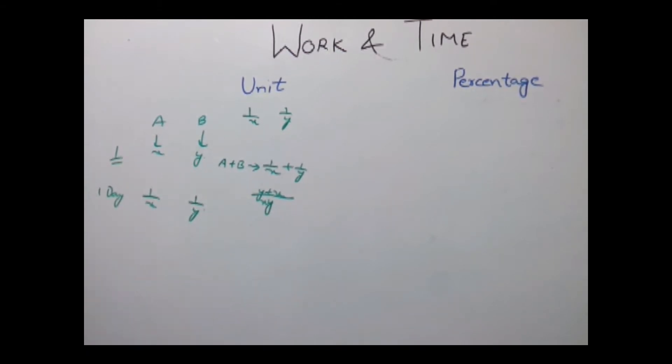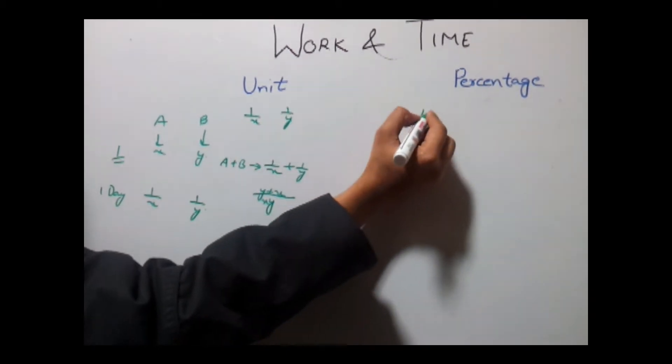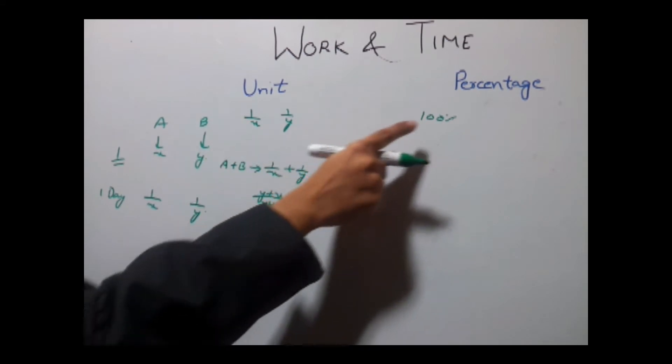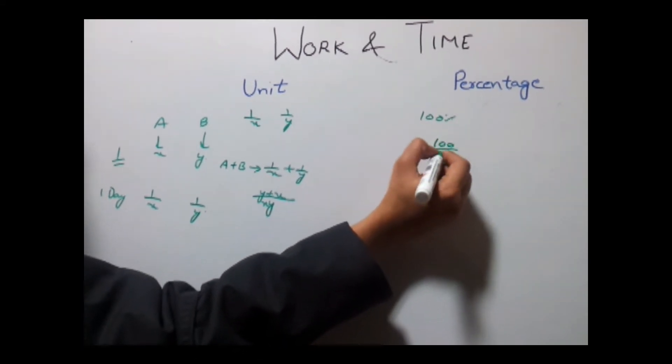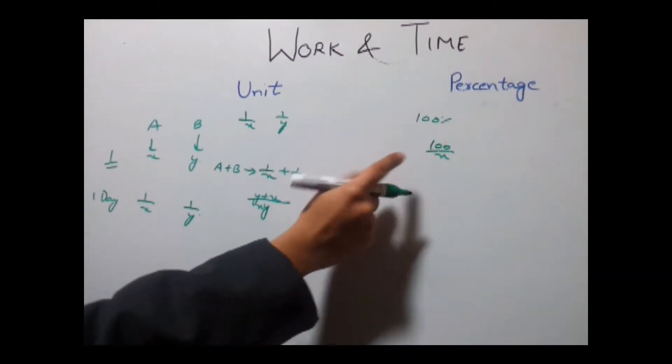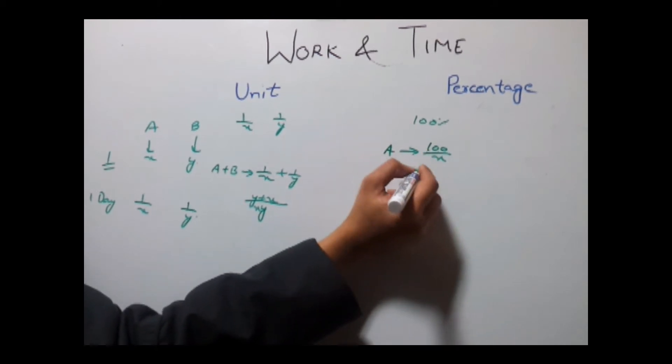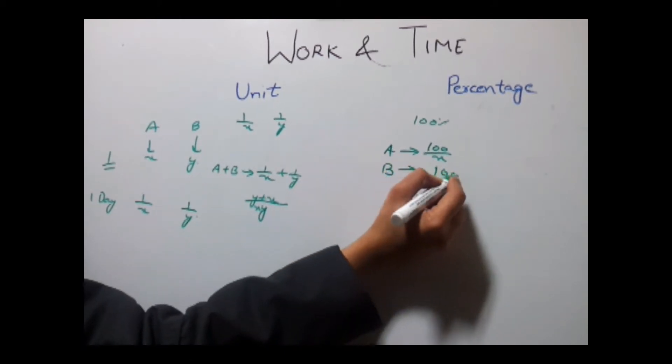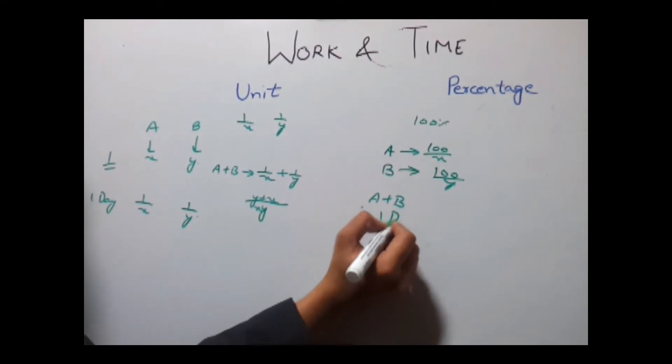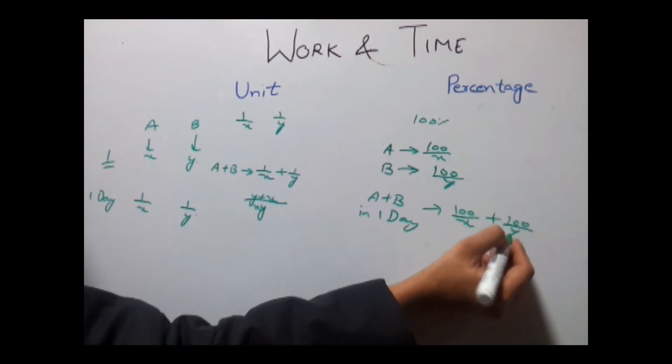Now, this work can also be calculated in terms of percentages where instead of taking 1 we say 100%, that is the work is denoted as 100%. So work done by A in this case would be 100 by X. This is the work done by A in one day. Similarly, work done by B in one day would be 100 upon Y, and work done by A and B in one day will be 100 upon X plus 100 upon Y.